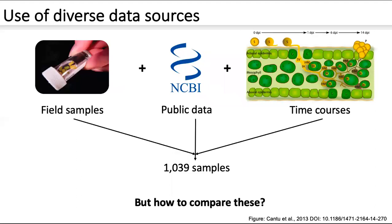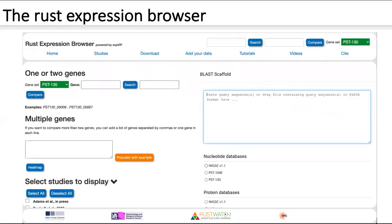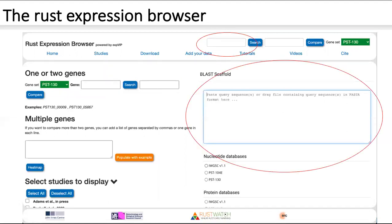So how do we solve this? How do we make this easier? We've developed the Rust Expression Browser, and here is the landing page. You can enter a gene ID into this box to search for a gene of interest, and add another gene to compare between the two. Under the multiple genes heading, you can add a number of different genes and produce a heat map of expression. Additionally, you don't need to know the gene ID — if you just have the nucleotide or protein sequence, we have a BLAST interface set up running by Sequence Server, a very user-friendly graphical interface, and it will link you straight to the expression results for that gene.